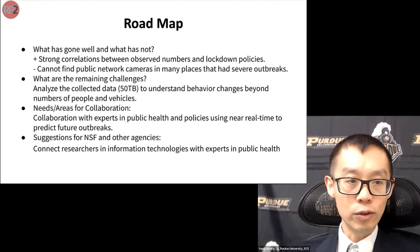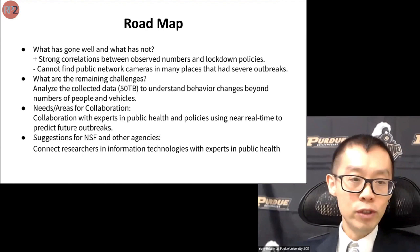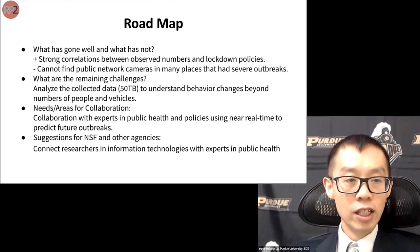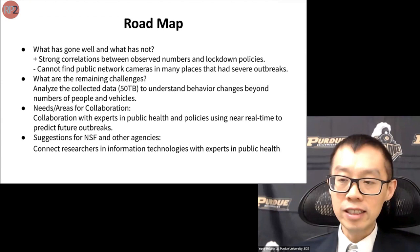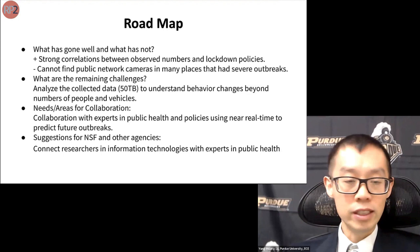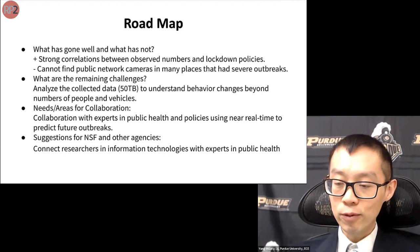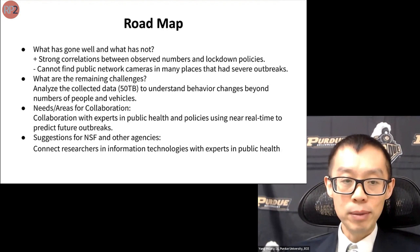A common question about this research is privacy. We only use data already on the internet in public places. On the positive side, we find a very strong correlation between observed people and vehicles. On the negative side, we cannot find enough cameras in places where there were major outbreaks. The major challenge is the scale of data — taking and analyzing so much data takes a very long time. We would be happy to share the data, and we appreciate NSF support. Guidance on how to interact with experts in public health or policy would also be welcome.